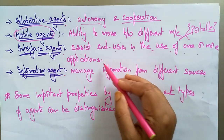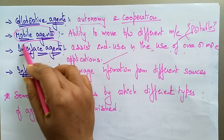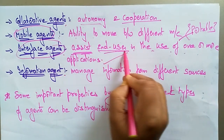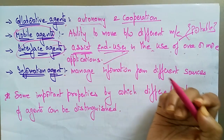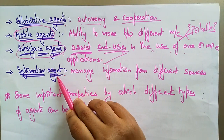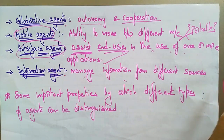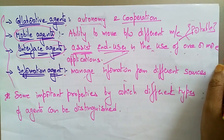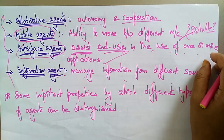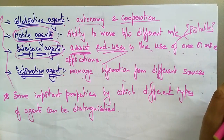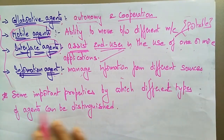Interface agents assist end users in the use of one or more applications. Information agents manage information from different sources. These are all the different software agents which are active on their respective roles.